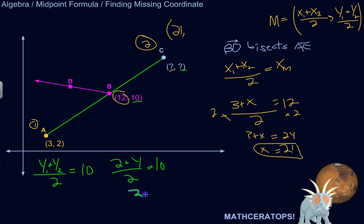Multiply by 2: 2 plus y equals 20. Subtract 2: y equals 18.